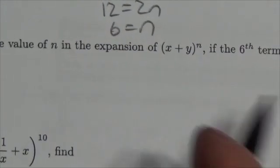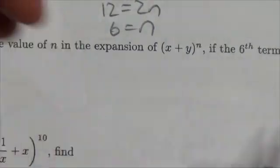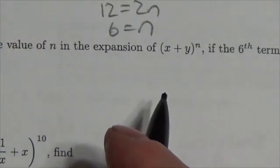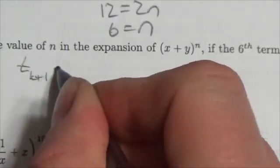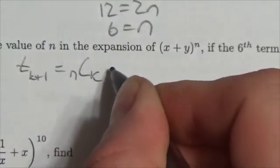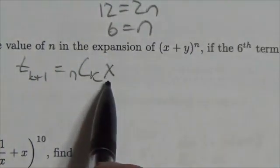Alright, well okay when we're doing an expansion here, a binomial expansion, the formula is t sub k+1 is equal to n choose k x, I mean by x here the first term,